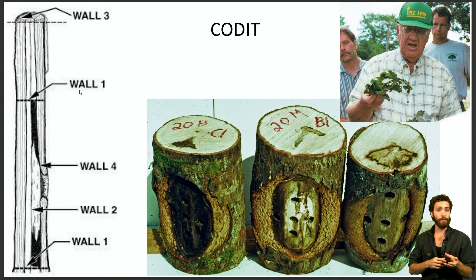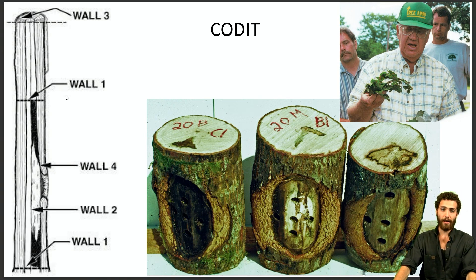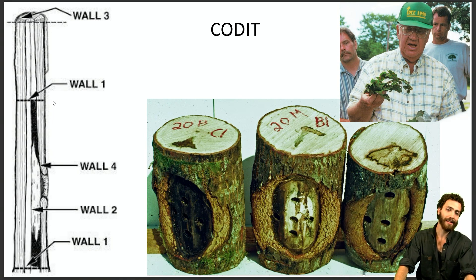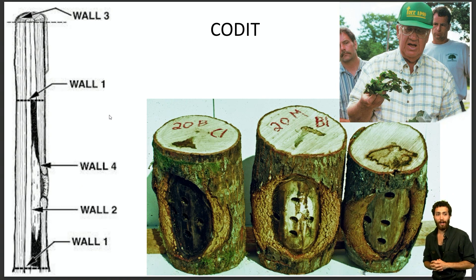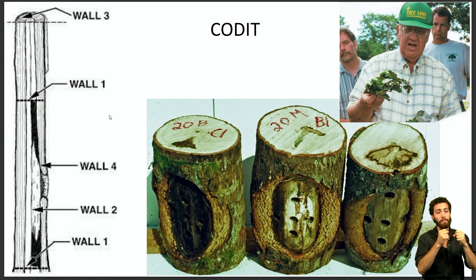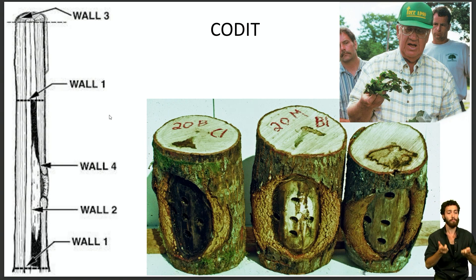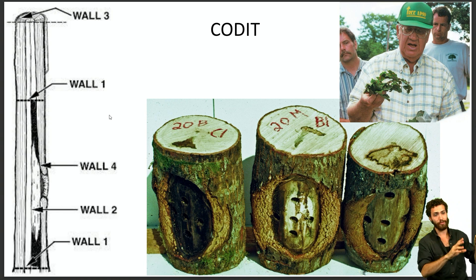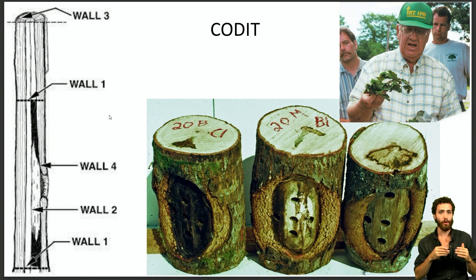Walls two through four are easier to show in cross-section. Wall one cannot be shown in cross-section because it runs perpendicular to the axial plane — it runs transverse in the tree — and so wall one is responsible for cutting off vertical movement, meaning movement up and down in the tree. Wall one is comprised of many chemicals and also Tyloses, which are plugs that parenchyma produce to plug up cells and prevent movement of anything from water to fungi. Over-exploitation of Tyloses can be a big problem for a tree — we'll talk about vascular wilts later. For now, wall one is the weakest wall and it prevents vertical movement of fungi throughout the tree.